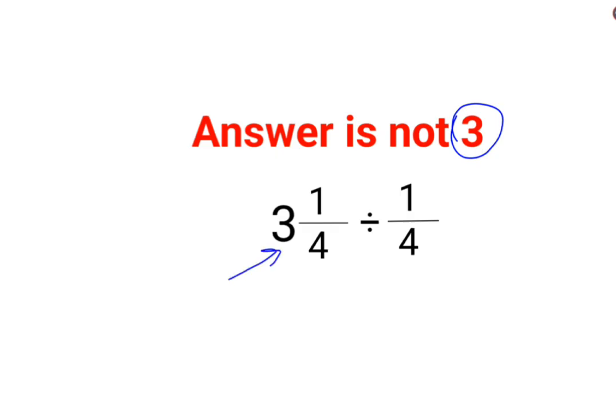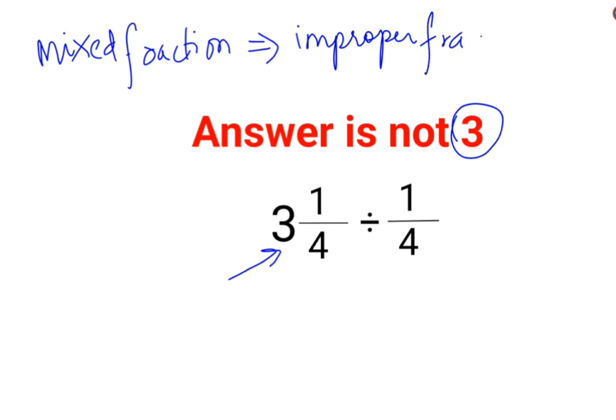When you have something like this, this is a mixed fraction. Your job whenever you encounter a mixed fraction is to first convert it into its improper fraction form. What is an improper fraction? An improper fraction is a fraction where the numerator is greater than the denominator. So first, let's convert 3 1/4 to an improper fraction.